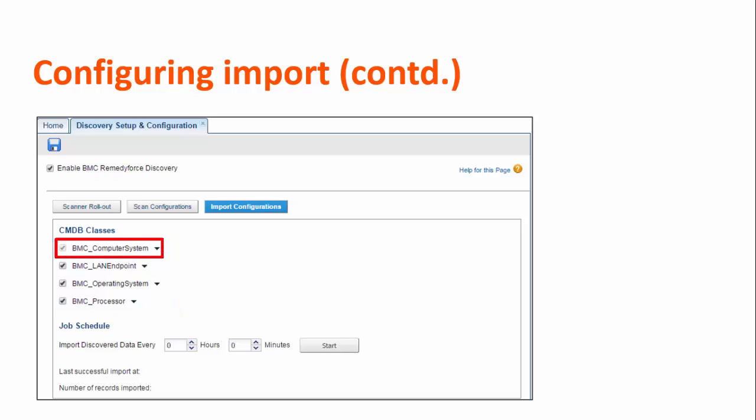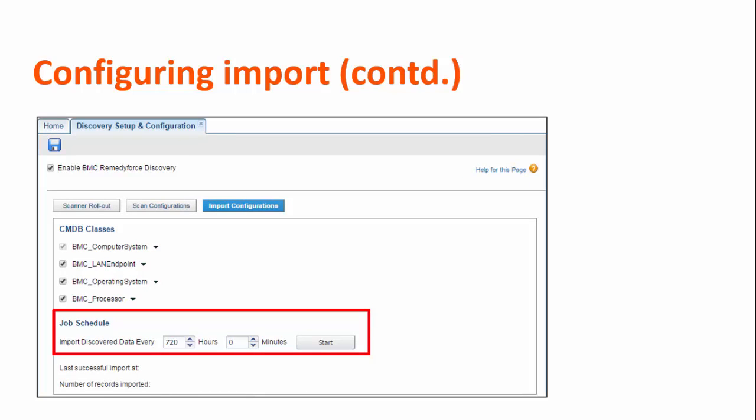The BMC_ComputerSystem class is selected by default, and you cannot clear this checkbox. This class stores devices such as desktops, laptops, and servers. In the Job Schedule section, specify the schedule to import discovered device details and click Start. For example, to import discovered device details once every two days, specify 48 in the hours field.